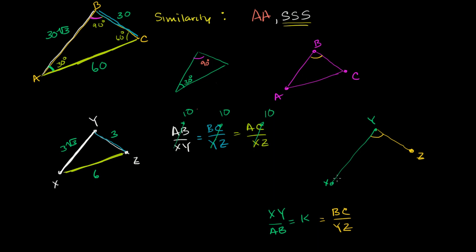Well, if XY is the same multiple of AB as YZ is of BC, and the angle between them is congruent, there's only one triangle we can construct. We're completely constraining the length of the third side, and that side is going to have to be at the same scale. So we call that side-angle-side similarity.